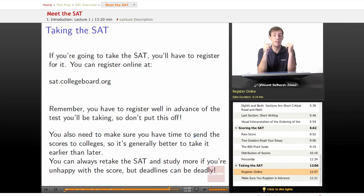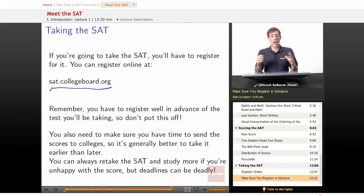If you want to take the SAT, you have to register for it. You can register online at sat.collegeboard.org. Go there, start looking through the site. It'll be really easy to find how to register and set up your test date so you can be ready to take the test down the road. Remember, you have to register well in advance of the test you'll be taking, so don't put this off. It is possible to have a late registration, but that'll put stress on you and extra added cost. So just do this well in advance of when you're going to be taking the test. You also need to make sure you have time to send the scores to colleges. So it's generally better to take it earlier than later. You don't have to rush your scores to colleges because once again, that's going to add stress and add cost. So you want to take it earlier than later, so you'll have plenty of time to send your scores into colleges.